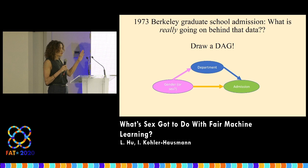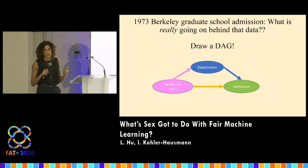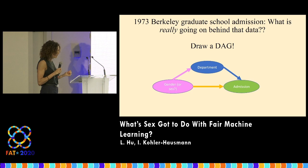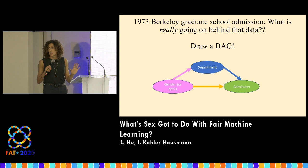Pearl suggests we should draw a DAG, or directed acyclic graph, which is supposed to illustrate the causal structure underlying the data generation. There are huge debates about which pathways should be considered discriminatory or unfair, what the structure of the DAG should be, what the content and directionality should be.